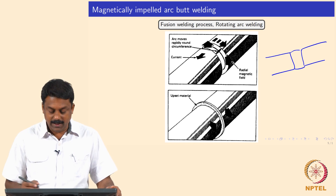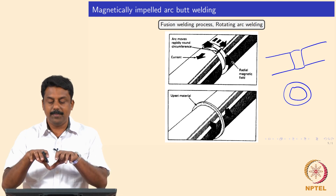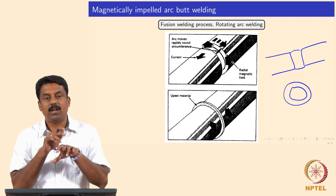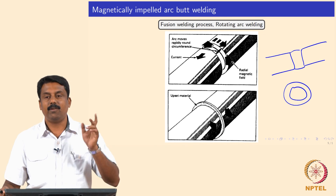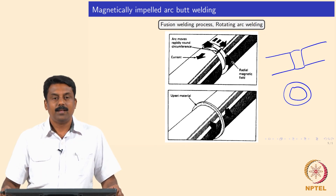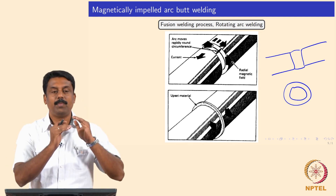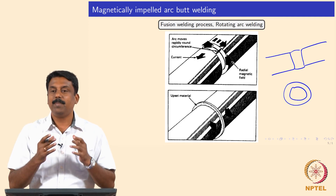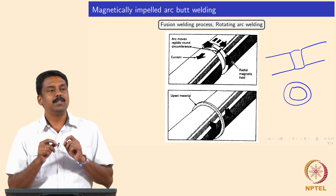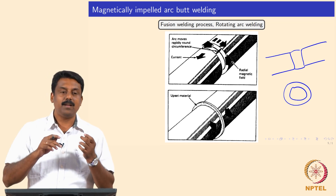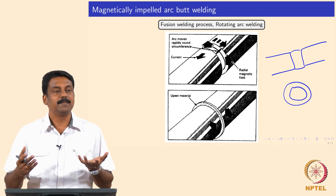So if you are welding a pipe configuration - a circular configuration - and you have two pipes and you want to strike an arc, the arc would always be struck at the surface, the inner diameter and outer diameter surfaces of the pipes. Suppose you want to use the arc as a heat source and you strike an arc only at the top and bottom surface of the pipe, you are not going to melt the entire cross-section thickness. You need to find a way to manipulate the arc, but that is not physically possible because electrons would always travel at the surface.